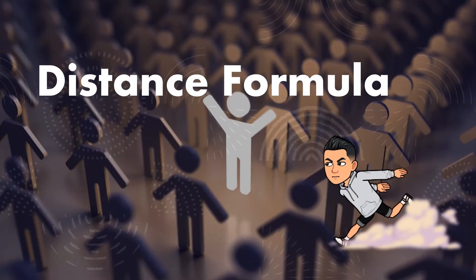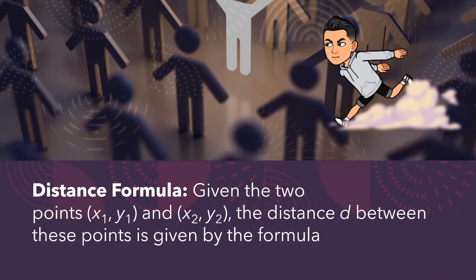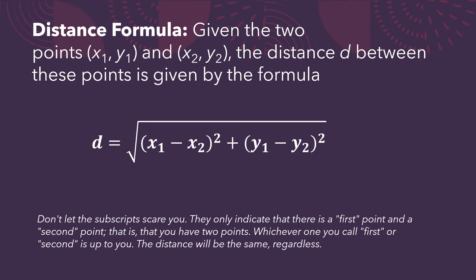Distance Formula. Given the two points x₁, y₁, and x₂, y₂, the distance d between these two points is given by the formula: d equals the square root of (x₁ minus x₂) quantity squared plus (y₁ minus y₂) quantity squared. This is the formula we use whenever we are asked to determine the distance between two given points. Let's have a couple of examples.